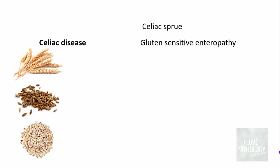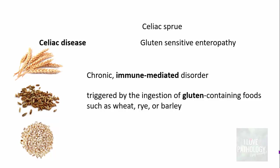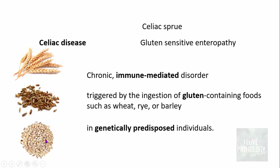Celiac disease is also referred to as celiac sprue, also known as gluten-sensitive enteropathy. It is basically a chronic immune-mediated disorder triggered by the ingestion of gluten-containing foods such as wheat, rye, and barley, in genetically predisposed individuals. This disease does not occur in all individuals — it occurs only in genetically predisposed individuals.